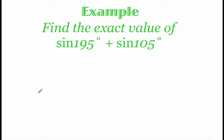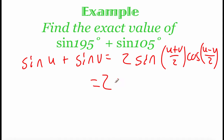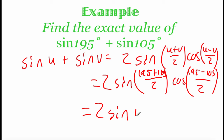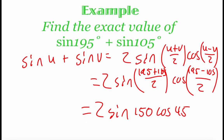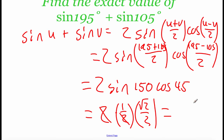In this example we've got sine of 195° plus sine of 105°. Using the formula sine u plus sine v equals 2 times sine of ((u plus v)/2) times cosine of ((u minus v)/2), we get 2 times sine of 150° times cosine of 45°. From the unit circle, sine of 150° is 1/2 and cosine of 45° is √2/2. Canceling a couple of 2's, on top we get √2 and on the bottom we have 2, so our final answer is √2 over 2.